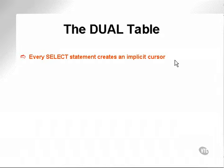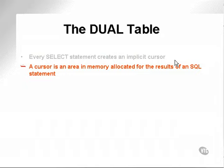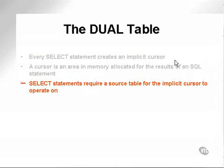Every time you execute any kind of SQL code against a relational database, it theoretically creates an implicit cursor. An implicit cursor is a chunk of memory. A cursor is an area in memory allocated for the results of the SQL statement. Think about it. You execute a SQL statement. It goes to a table. It builds what's called a cursor in a chunk of memory, which contains the result of that SQL statement.